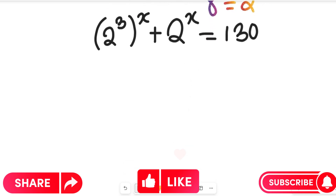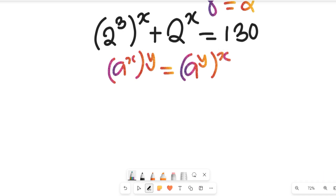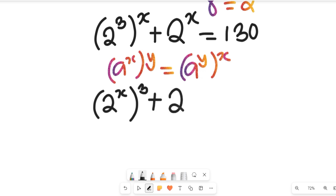Now let's simplify this further. Recall the algebraic rule that a to the power of x times y equals a to the power of y times x — we can invert the parts. Applying that here, we get 2 to the power of x, all to the power of 3, plus 2 to the power of x, equal to 130.